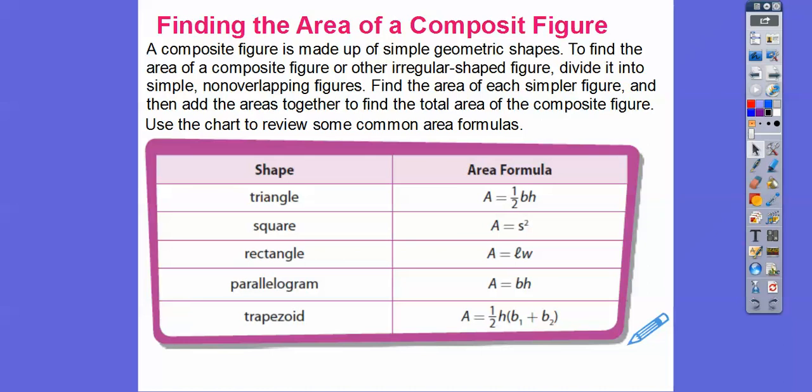So a composite figure is made up of simple geometric shapes. And to find the area of those composite figures or other irregular shaped figures, oftentimes we can divide it up into simple non-overlapping figures. Like rectangles, squares, triangles, all that stuff. And then we can find the area of each. And then add those areas together to find the total area of all that stuff. And so there's our formula to find the area of triangles, squares, rectangles, parallelograms, and trapezoids. Remember our groovy trapezoids?